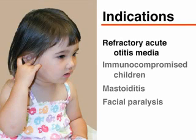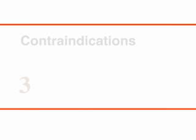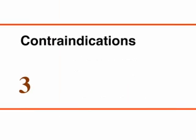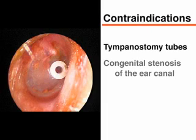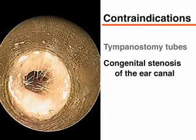Tympanocentesis is recommended in children with refractory acute otitis media, in immunocompromised children with otitis media, and in children with suppurative complications of acute otitis media, such as mastoiditis or facial paralysis. Tympanocentesis is contraindicated in children with tympanostomy tubes and in children with congenital stenosis of the ear canal.